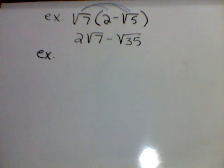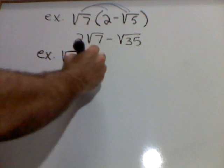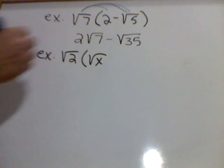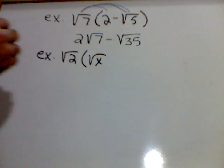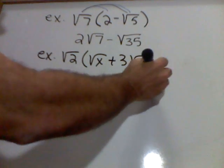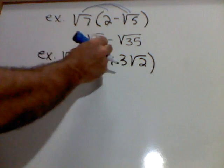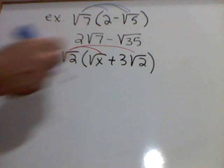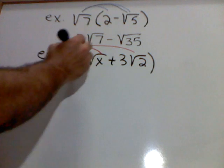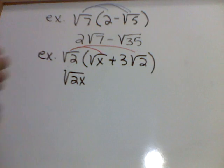Next example, square root of 2 times square root of x plus 3 square root of 2's. Once again, I need to distribute this square root of 2 through to both of these. So, square root of 2 times square root of x is square root of 2x.